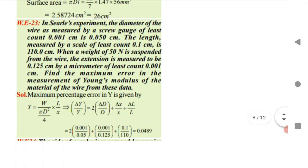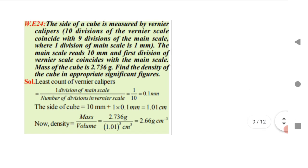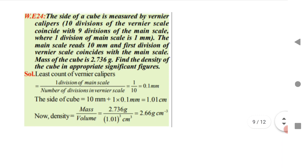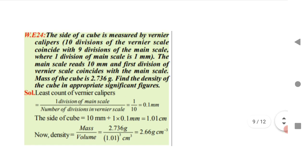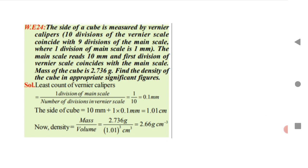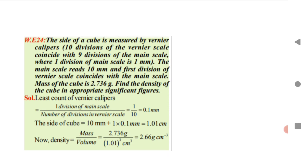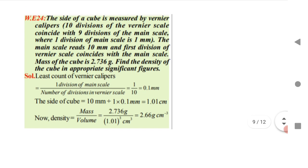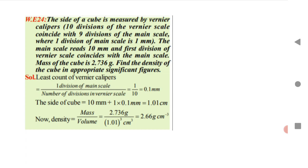In Searle's experiment, the diameter of the wire is given; substitute into Young's modulus formula to get the answer. The side of a cube measured by a vernier caliper: find the least count of the vernier caliper, then find the side length, and if asked, calculate the density. This concludes Units of Measurement Part 2 — the important practical MCQs. Part 1 (theory questions) is linked in the description. Thanks for watching.